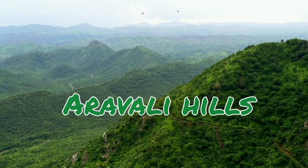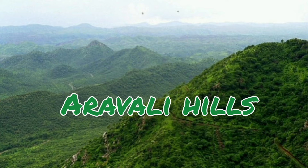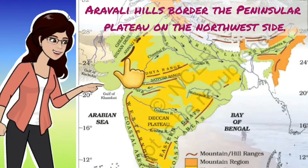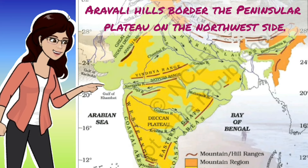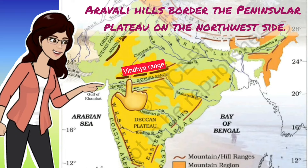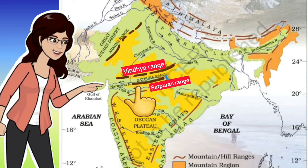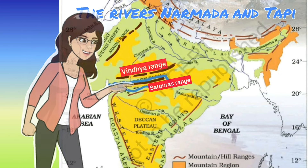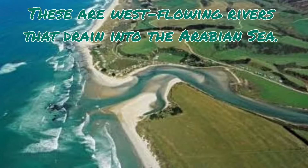The Aravali Hills, one of the oldest ranges in the world, border the plateau on the northwest side. Other important ranges are the Vindhyas and the Satpuras. The rivers Narmada and Tapi flow through these ranges and are west-flowing rivers that drain into the Arabian Sea.